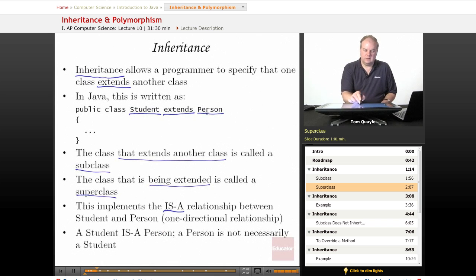Student has all the attributes and capabilities that a person does plus more. It is a one-directional relationship. So a student is a person, but a person is not necessarily a student. A person may be a person without being a student. They may be something else. So it is definitely a one-directional relationship where the subclass student inherits attributes and functionality from person, but the relationship does not go the other way. Person does not get anything from student.